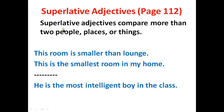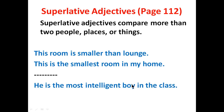In the next example I will apply a superlative adjective as I'm going to compare the room with the rest of the rooms in the house. This is the smallest room in my home. The word 'smallest' is a superlative adjective. Whenever you use a superlative adjective, you will use the article 'the' before it. For example: he is the most intelligent boy in the class, because I am comparing the brilliance of one boy with all the other members in the class.